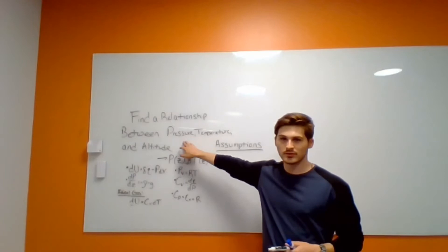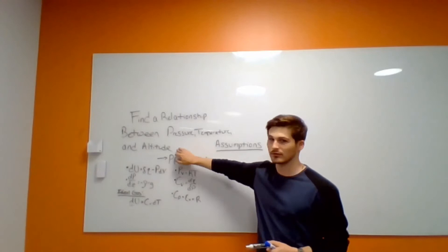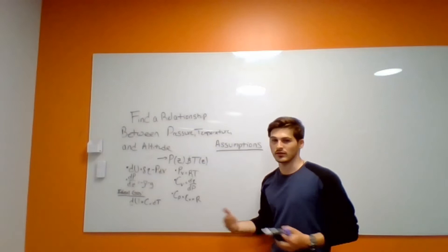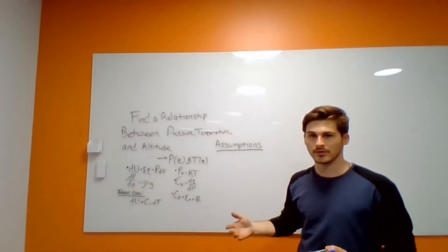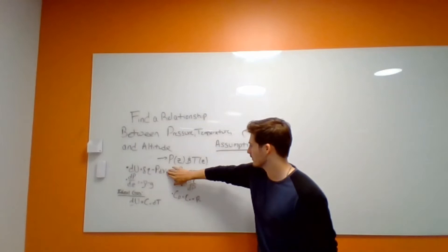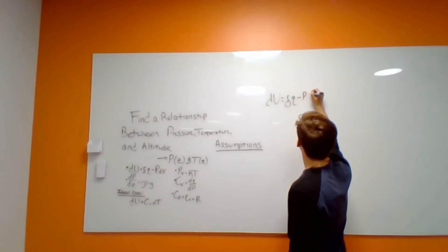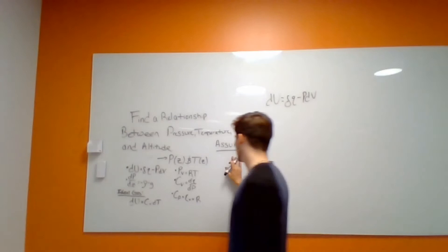First I'm going to find a relationship between temperature and pressure, and then from there we'll find a relationship between pressure and altitude. We'll take those two relationships, find a third relationship, and we'll have the equations to describe how pressure, temperature, and altitude are related. So first, for the temperature and pressure relationship, we'll start out with the internal energy equation: the change in internal energy is equal to a small amount of heat minus P·dV. This is where we make our first assumption.